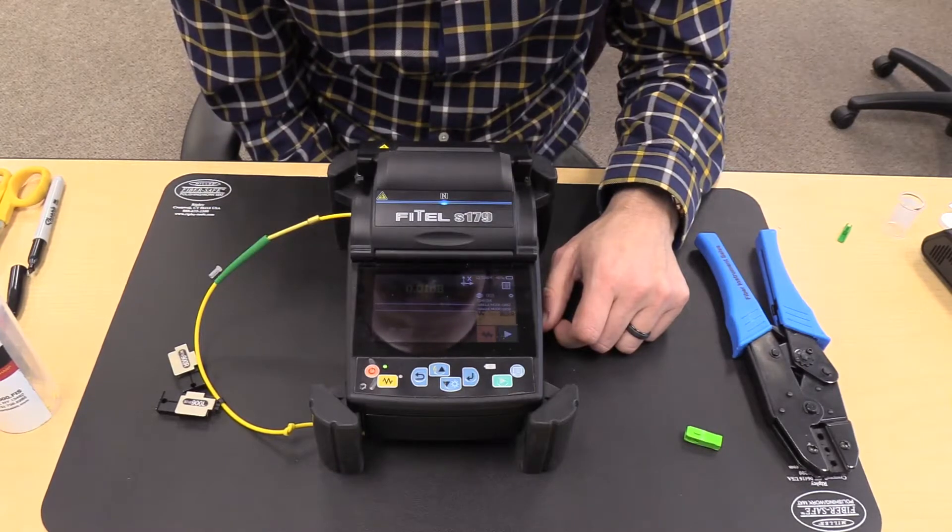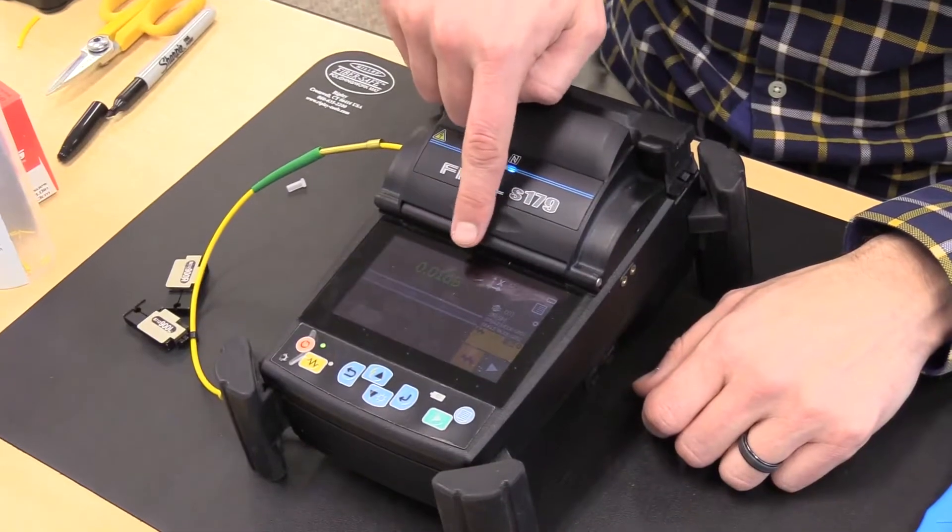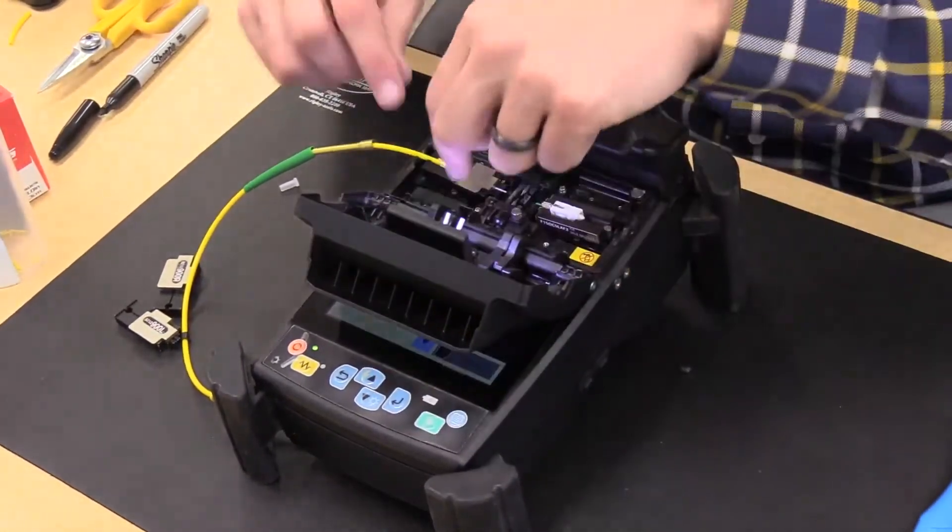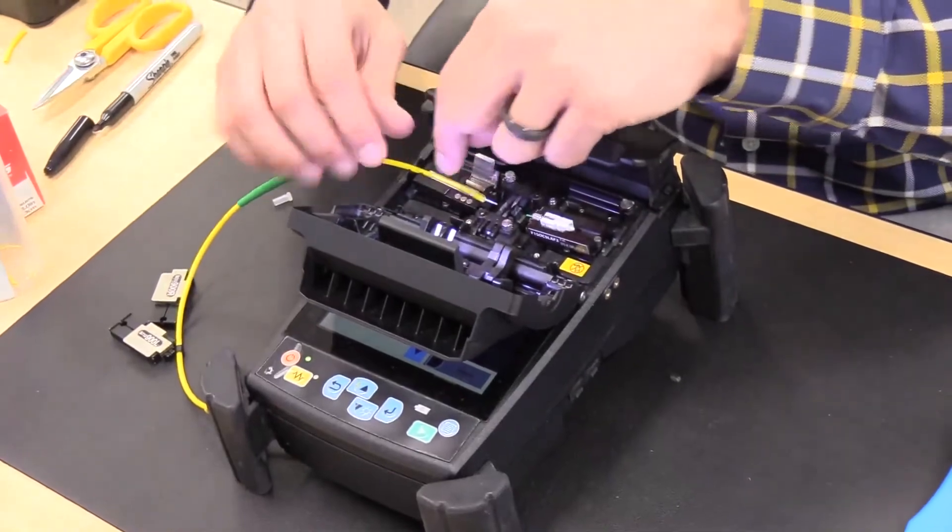The splice is complete with the estimated loss on top. Open the lid of the fiber holder and gently pull the fiber right out of the splicer.